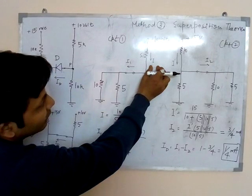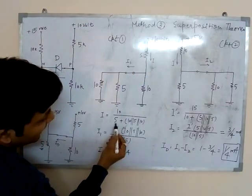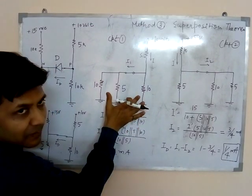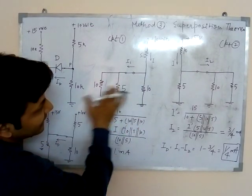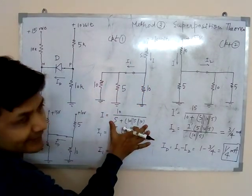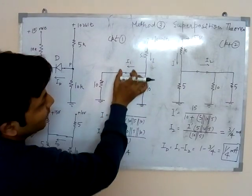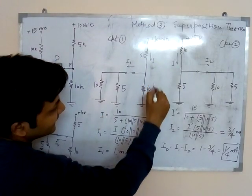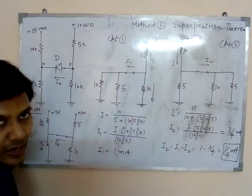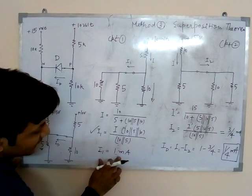So here the total I I can calculate. 10 divided by the total resistance. Total resistance is 5 plus 10, 5 and 10, 3 are parallel. All 3 are parallel in series with this 5. So 10 divided by this gives the total current. And total current is going to divide in two parts. This is I1 and second one is in the 10 here. So I will apply the current divider rule and I will find out the I1. I1 value is 1 mA.